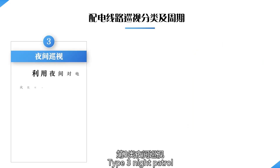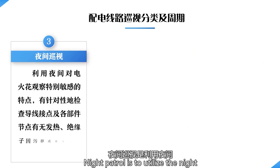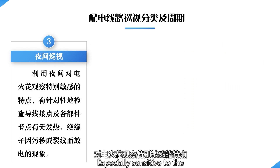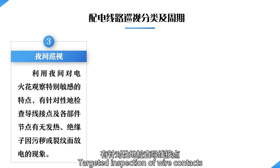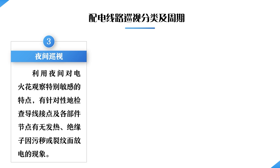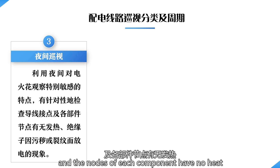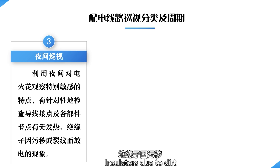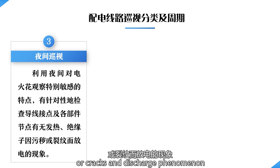Type 3 is night patrol. Night patrol utilizes nighttime conditions, especially the sensitivity to spark observation, for targeted inspection of wire contacts and the nodes of each component to check for overheating, and of insulators for dirt, cracks, or discharge phenomena.